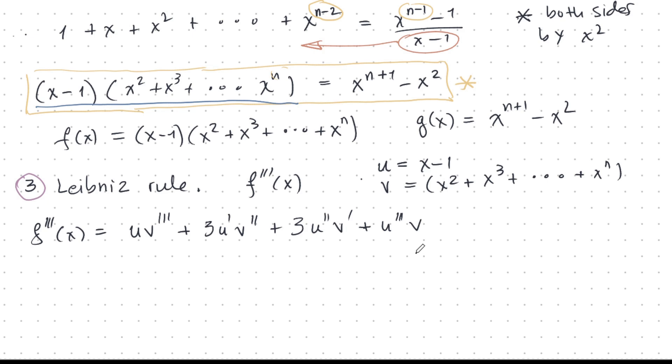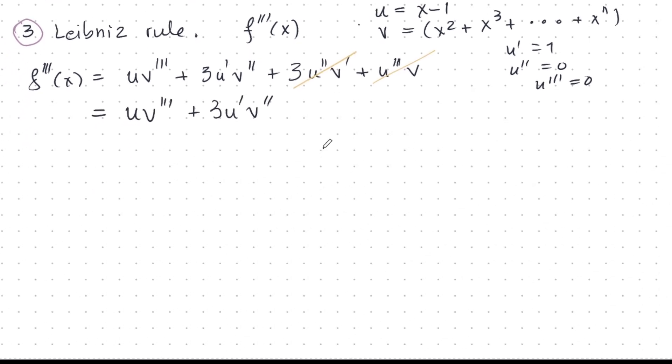So some of these things are zero. u, okay, u prime is 1. But u prime prime, that's zero. And u prime prime prime, that's zero. So that simplifies things. This here goes away and this goes away.